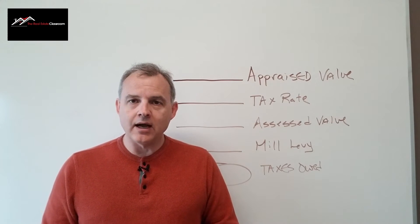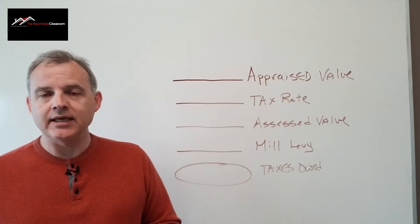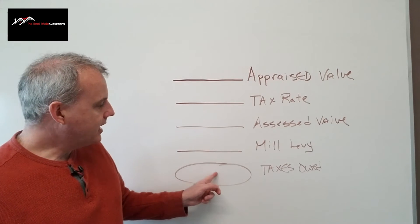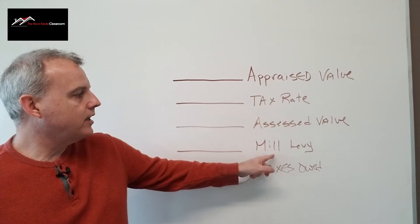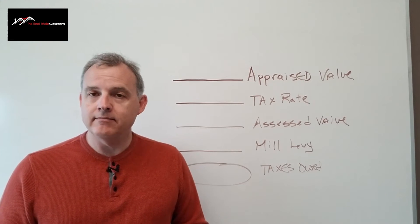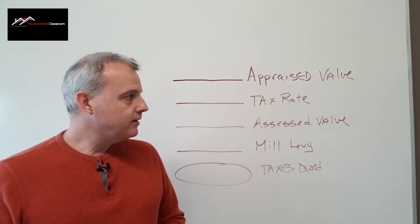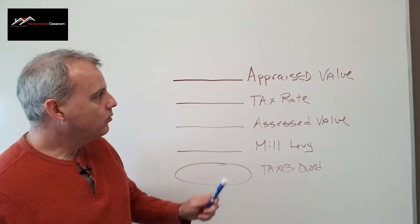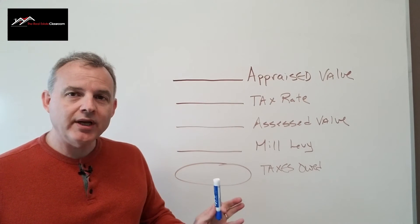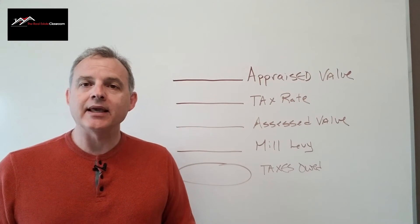You need three out of four items for you to successfully calculate property taxes that are owed using the mill levy method. The licensing exam will always give you at least three out of the four so you can make the calculations.